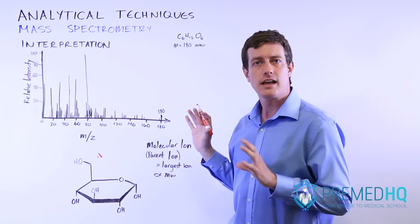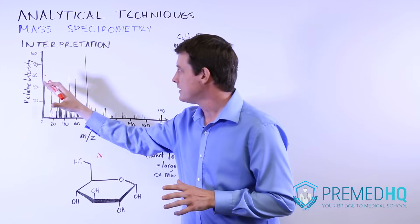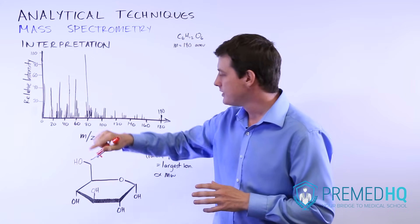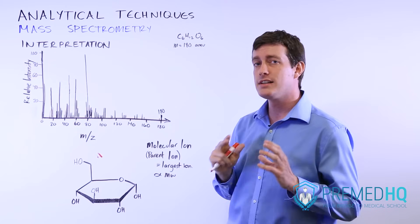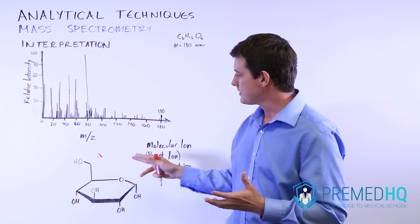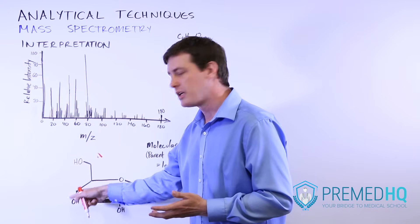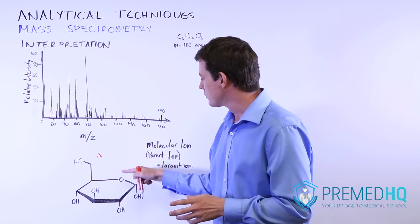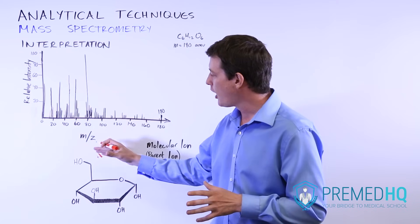We'll start out by going over the axes. The y-axis is the relative intensity. If your little cationic component ends up hitting the receiver, that will record an event. Certain cations will be more common. For example, when dealing with glucose you might find a hydroxyl group, an OH, being very common because there are a lot of potential hydroxyl groups you can make with glucose, so you'll end up seeing a lot of events corresponding with the OH functional group.